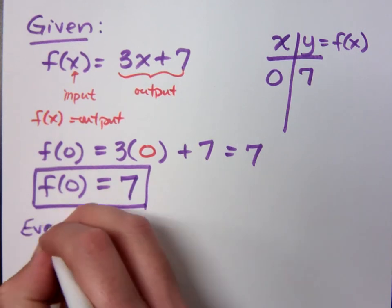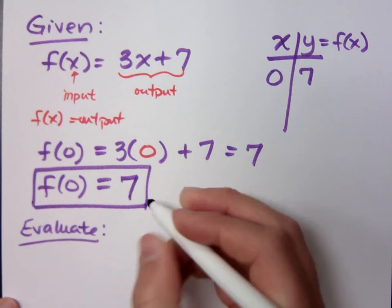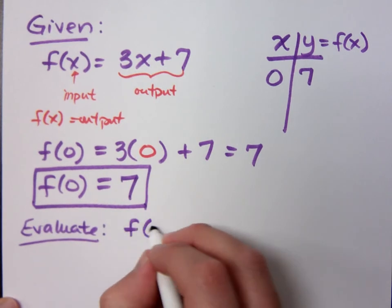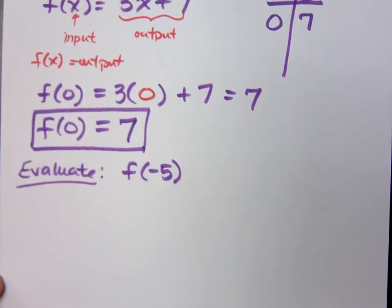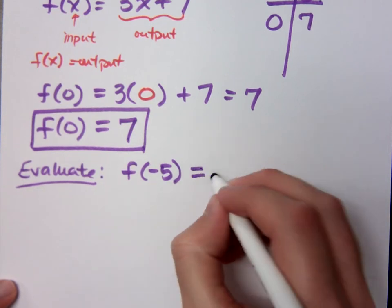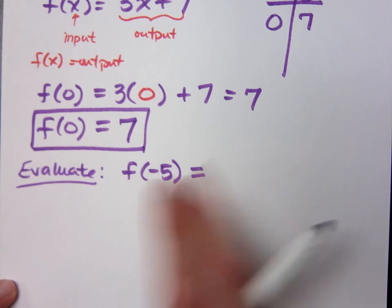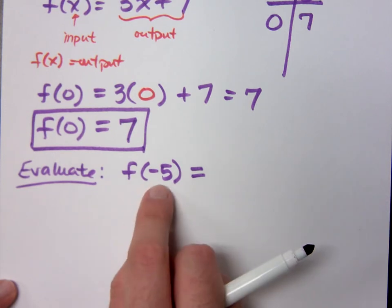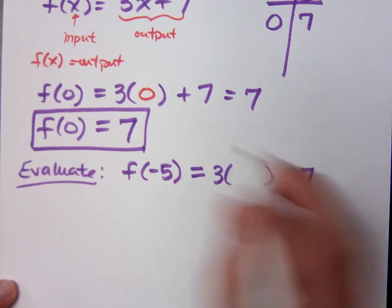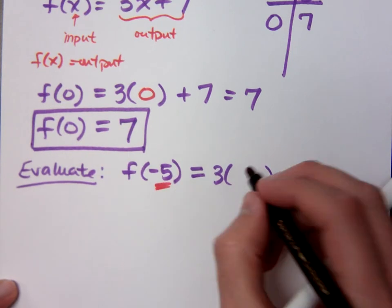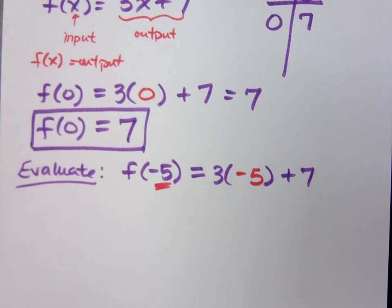If I ask you to do this: evaluate f of negative 5. What does f of negative 5 mean? And let me ask you this: do I write this guy is equal to 3x plus 7? No. As soon as I have my input value here, I no longer have x, but I have that input value. So this is my input value, and he goes right here.